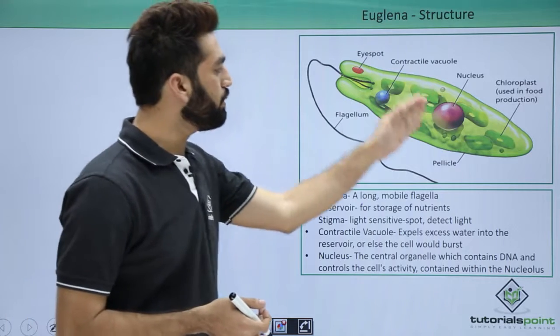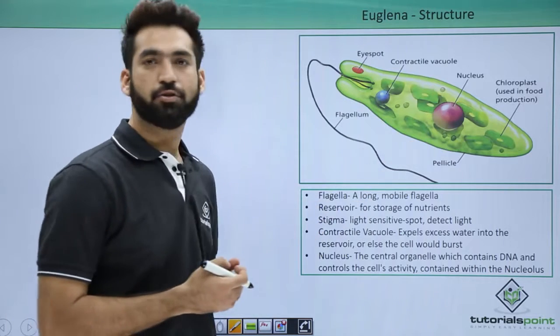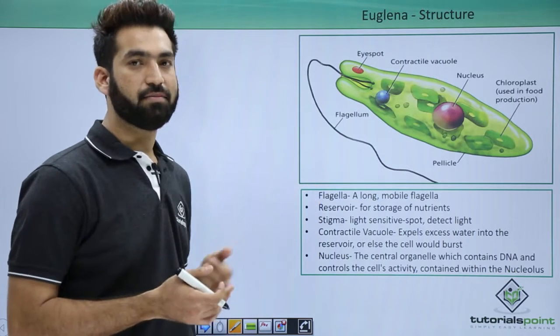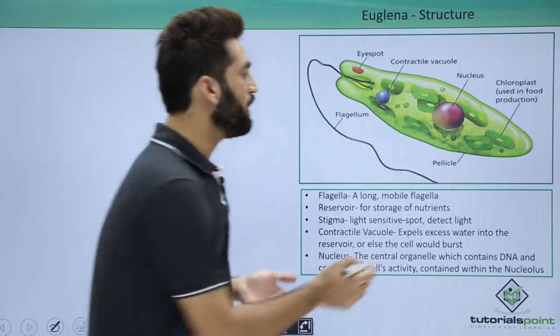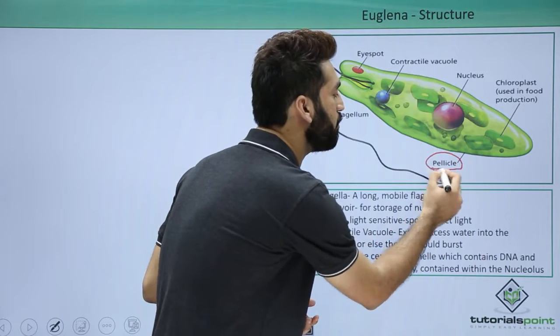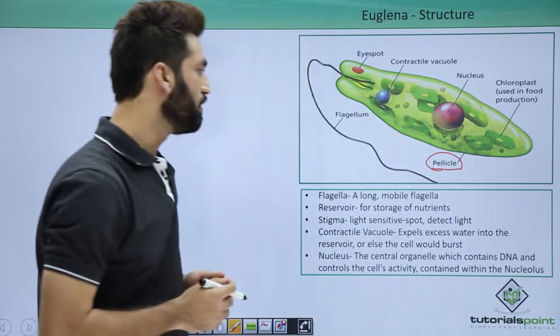Euglena members do not have a cell wall. Instead, they have a particular elastic layer which is called the pellicle.